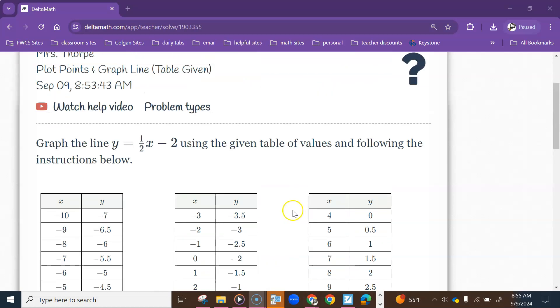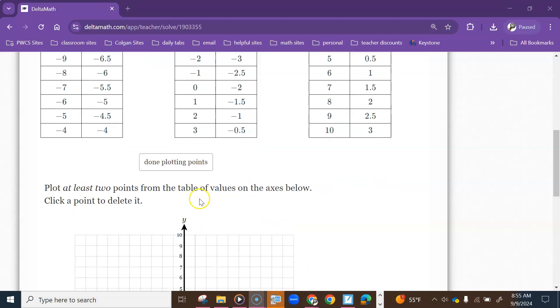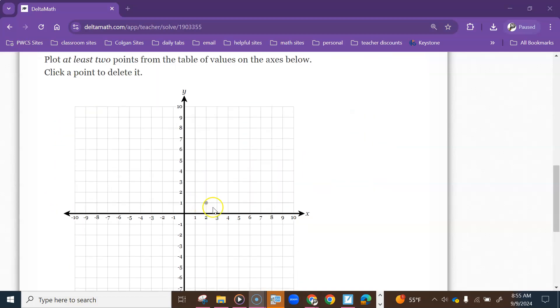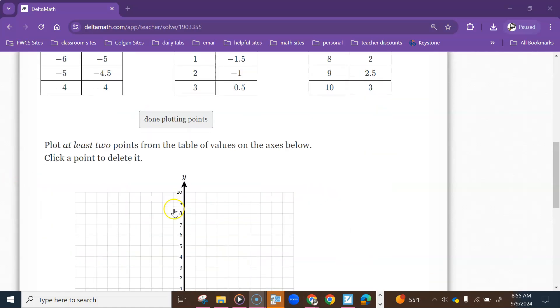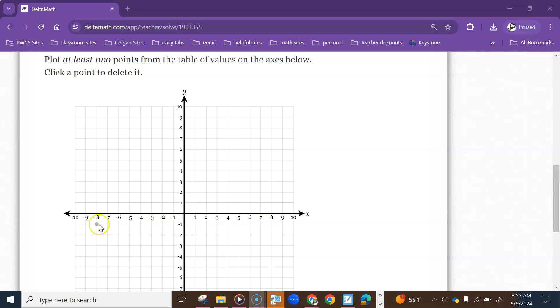So for this one, it says graph the line using the given table of values and follow the interaction below. Not all of these points are going to fit on this graph, but you want to probably stay away from the decimals, stick with the whole numbers, and plot the points that you can.